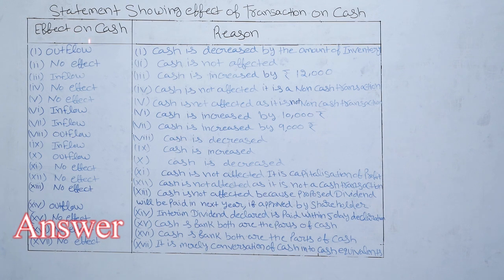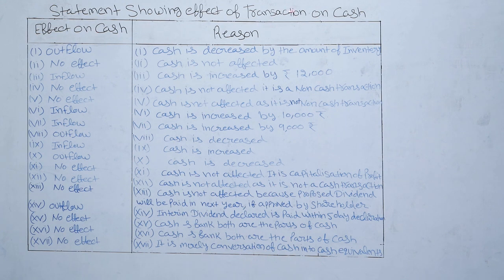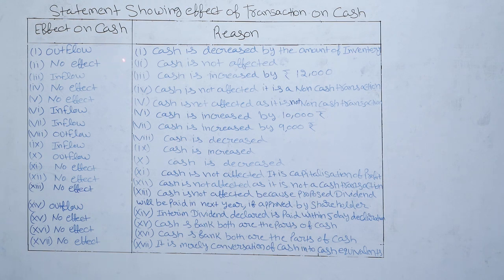Now let's start the answer. We have to tell whether each item results in inflow or outflow of cash. The statement shows the effect of each transaction on cash, with two columns: effect on cash, and reason. For the first item — purchase of inventory for cash — when we purchase goods for cash we have to pay cash, so it results in a decrease in cash. Effect: outflow. Reason: cash is decreased by the amount of inventory.